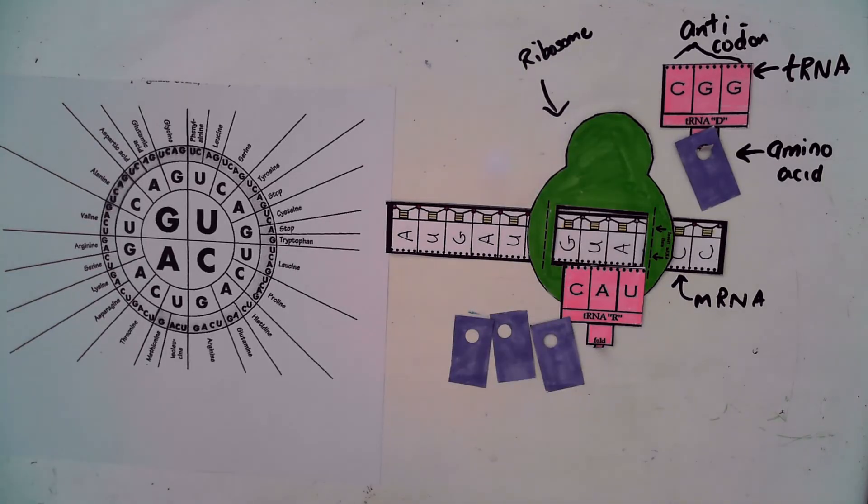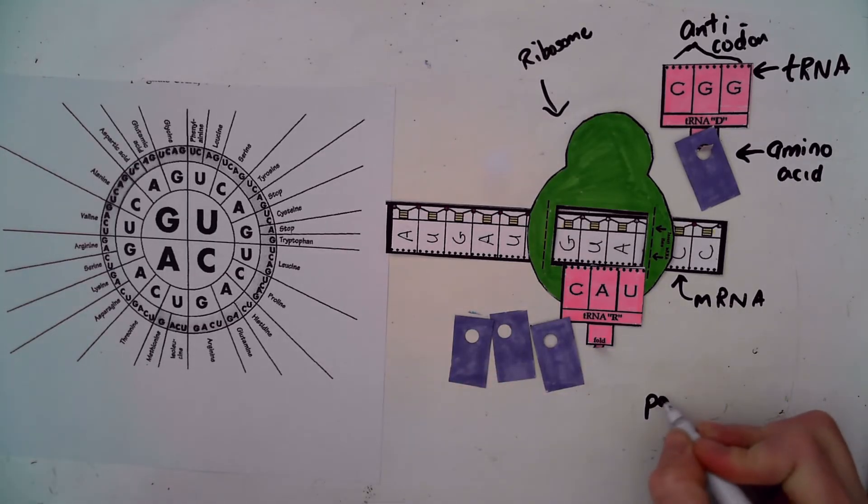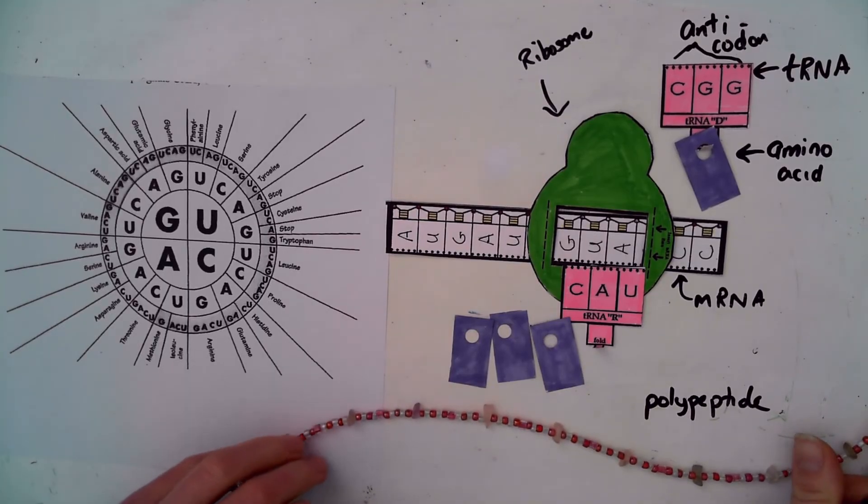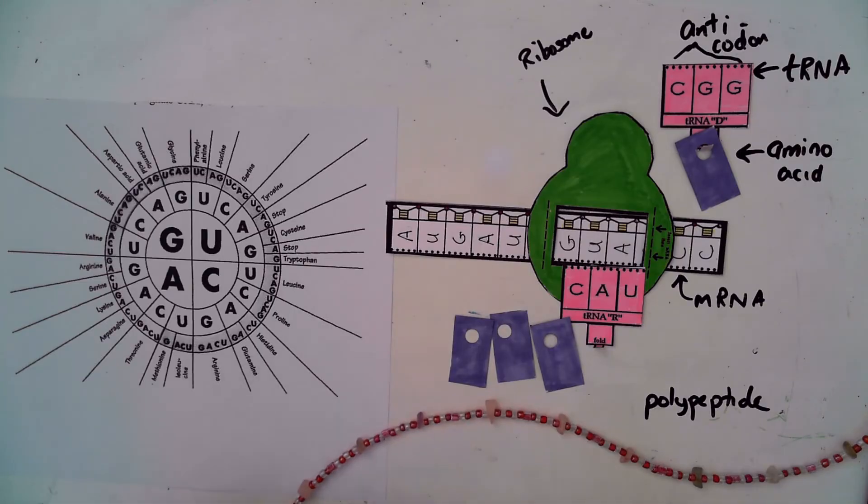So what have we created in the end? We've created a chain of amino acids that we call a polypeptide. Another way to visualize it might be something like this. It wouldn't be as much of a pattern as this string of beads. But each bead would represent an amino acid. So this would be called a polypeptide.